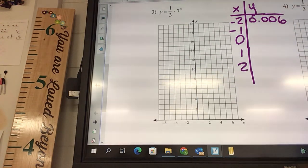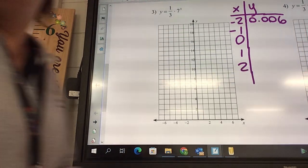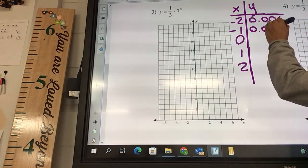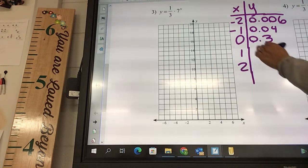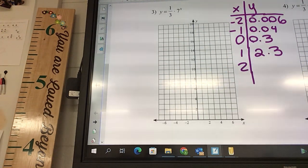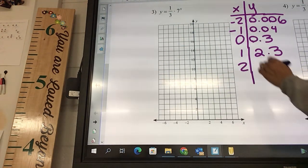Start typing those in. What did you guys get? 0.006. So that's pretty much zero. That's about what it's at. Do the next one. Change it to a negative 1. What'd you get? 0.04. What's on the zero? 0.3. And then the 1? 2.3 and the 2. 16.3 repeating.